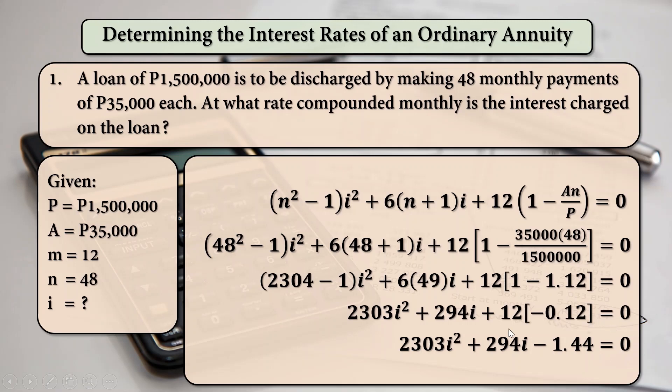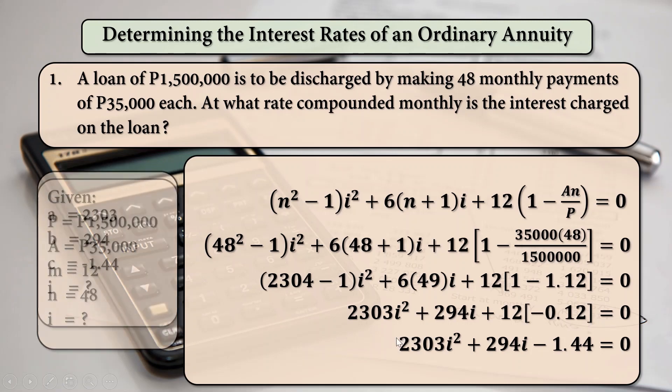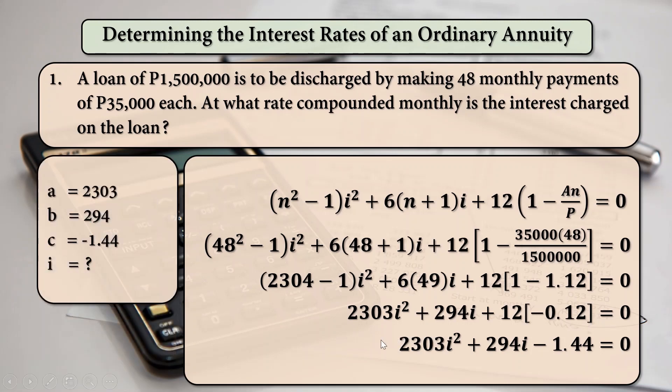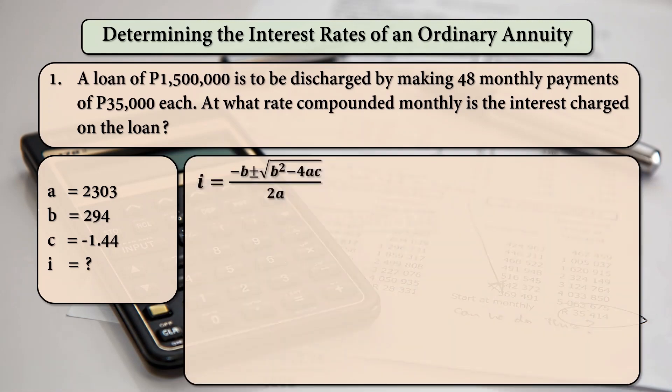So, from this equation, we are going to find for the A, B, and C, which we are going to substitute for the quadratic formula in finding for i. So, our A is the first term, which is the numerical value of i squared. Our B is 294, the numerical value of i. And then our C is our constant, negative 1.44. And so, we are going to solve for i using the quadratic formula, substituting for A, B, and C.